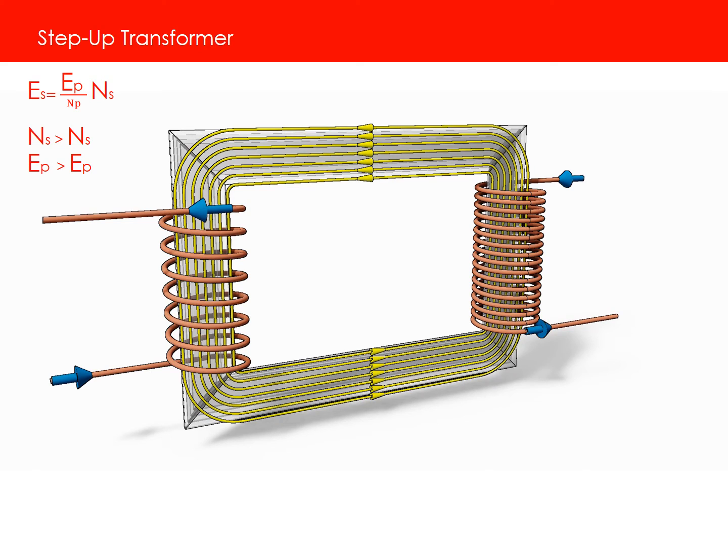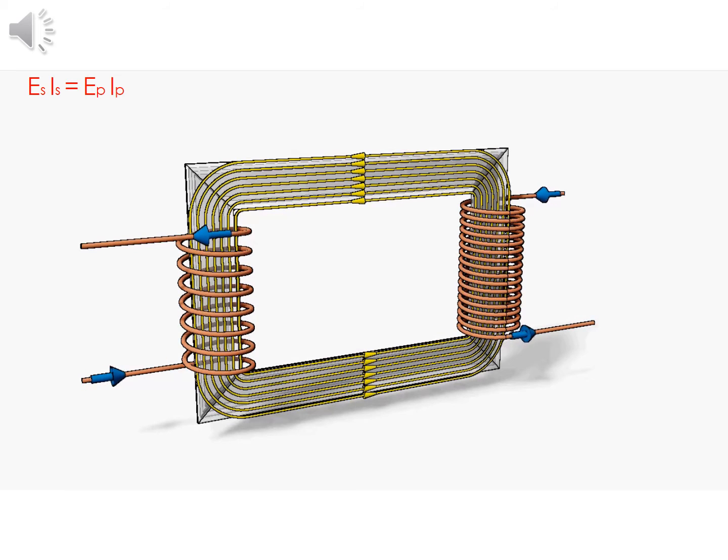For the reverse case, one can increase the voltage. But since energy is conserved, the primary and secondary currents have to obey the following relationship.